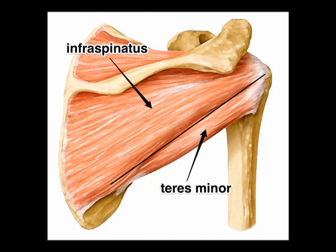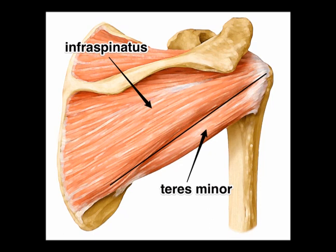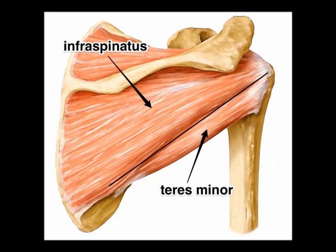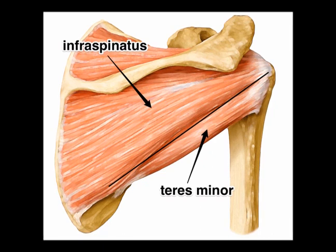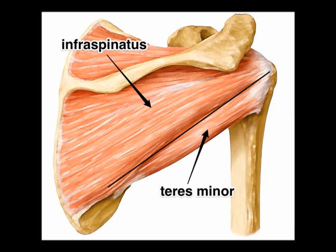Internal impingement syndrome, also known as posterior impingement syndrome and often abbreviated to PII, occurs at the posterior lateral articular side of the rotator cuff as it abuts the posterior superior glenoid rim and labrum when the shoulder is in a maximum abduction and external rotation position. This is called the late cocking phase in the throwing positions. Pain occurs due to compression of the supraspinatus and infraspinatus tendons by the posterior rotated greater tuberosity of the humeral head against the posterior superior portion of the glenoid fossa.